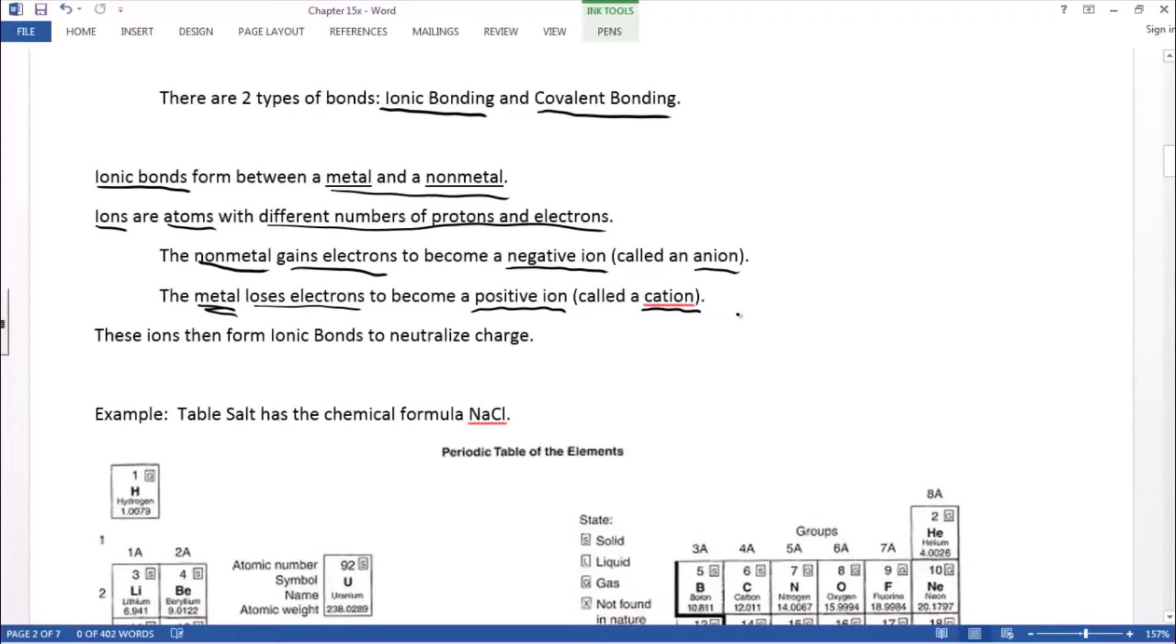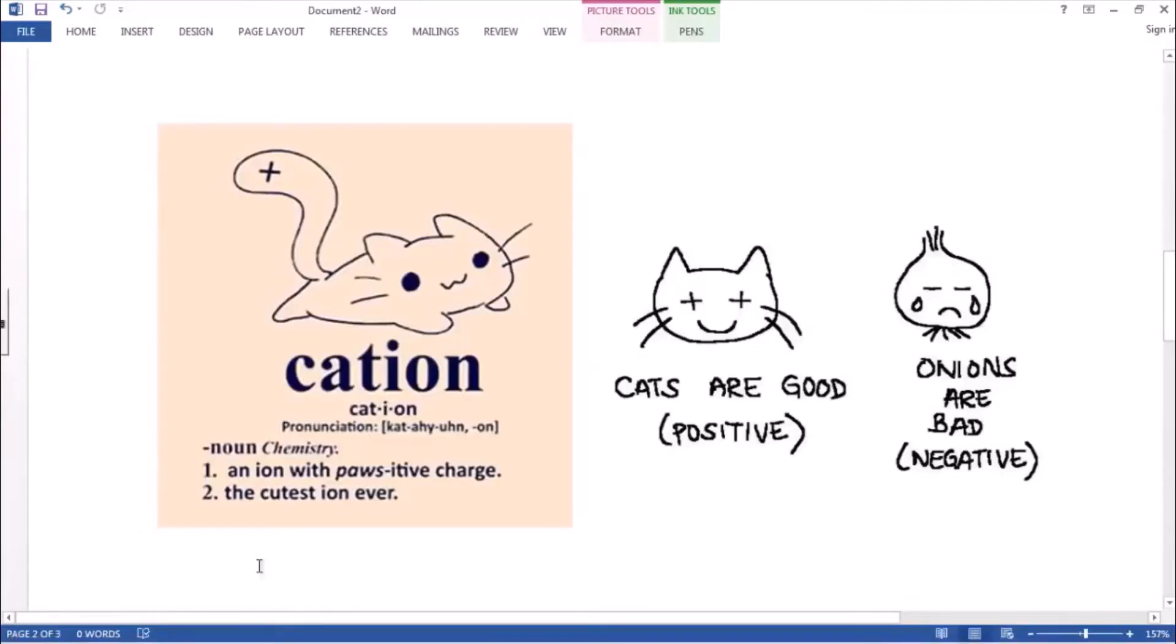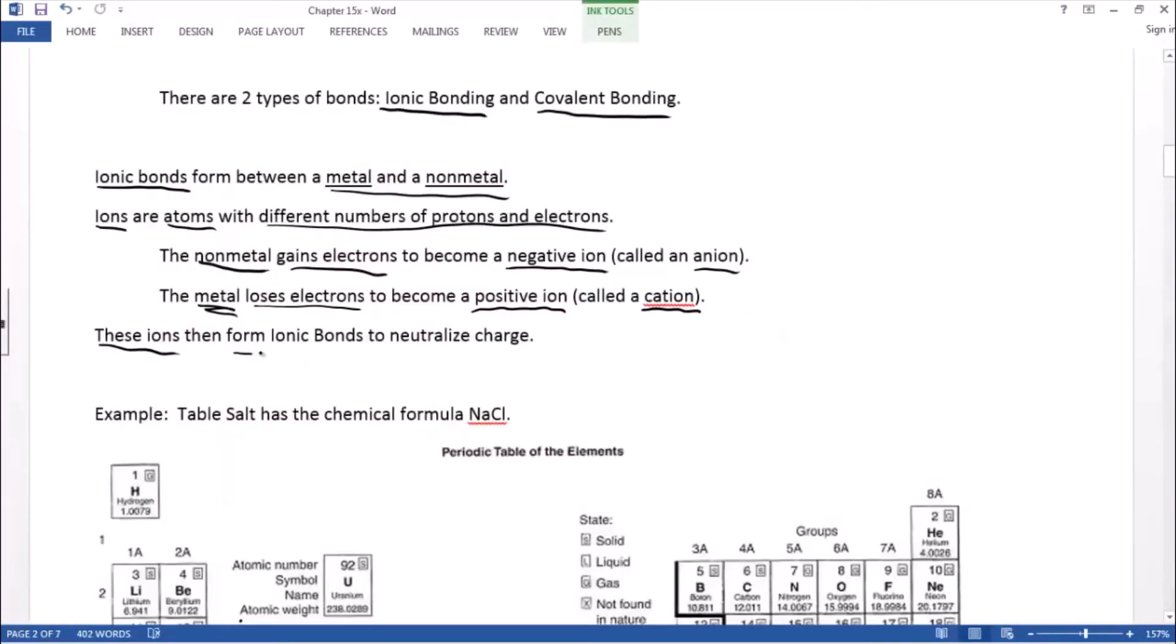I know it looks like cash in, but we pronounce it cation. And to help you remember that, here's a little humor. These ions then form ionic bonds, and they do that in order to balance out or neutralize their charge.